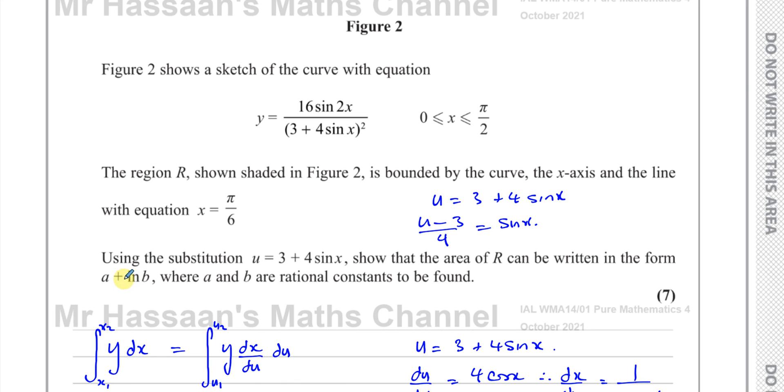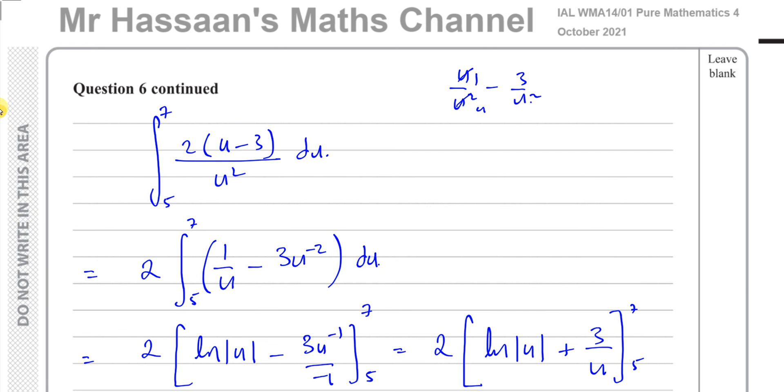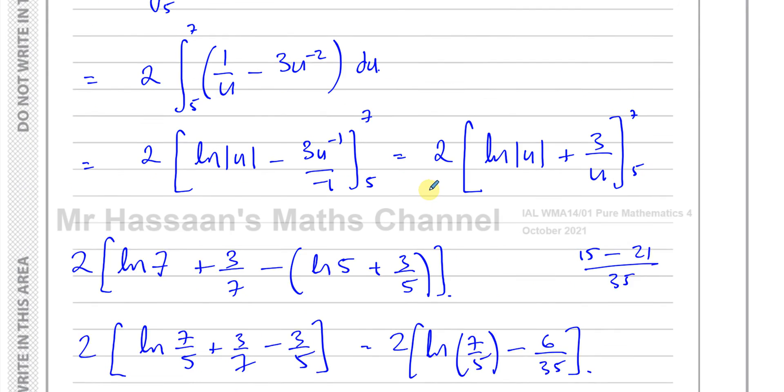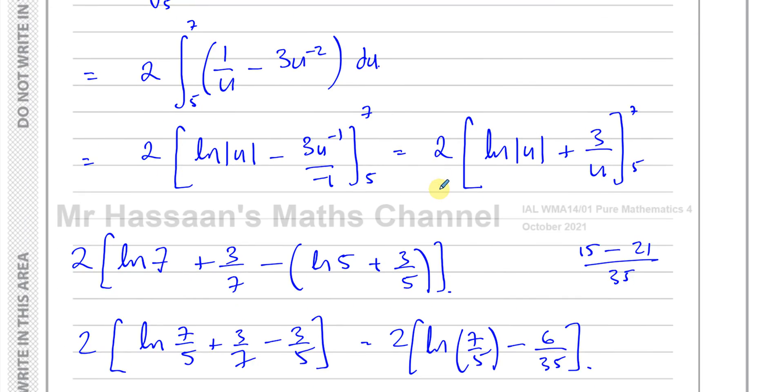So we want it in the form, they said in the form a + ln b. So they don't want any constant here. So I can use the power law. So I'll have -12/35 + ln(49/25) using the power law. And this is the form in which they wanted it, a + ln b. They didn't want any constant here. So I've written it in the form required. And that is the area under that curve for question number 6.